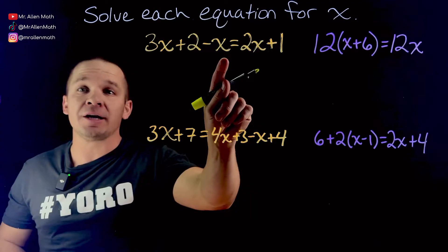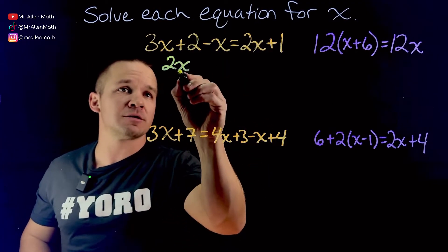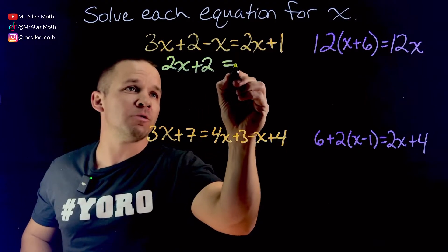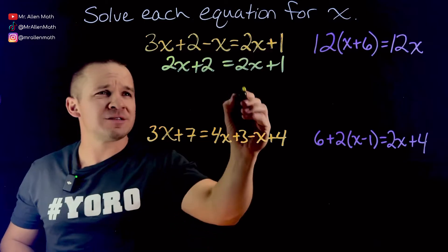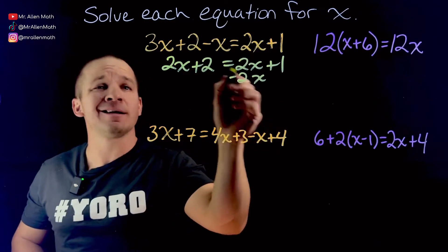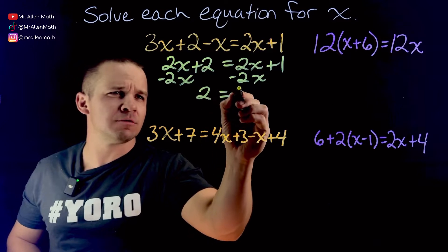I'm gonna combine my like terms on the left, on the right, as needed, just like normal. So I'm gonna get 2x plus 2 equals 2x plus 1. Now, if I subtract 2x from this side, I gotta do it to this side. And I end up with just 2 equals 1.